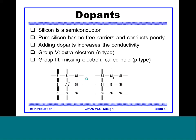Group 3 or Group 5 elements are added to silicon to increase conductivity — these are called dopants. When a Group 5 element like phosphorus is added, it contributes an extra electron per atom, increasing conductivity; this is called N-type silicon. If a Group 3 element is added, there is a deficiency of electrons called a hole; this type of material is called P-type.